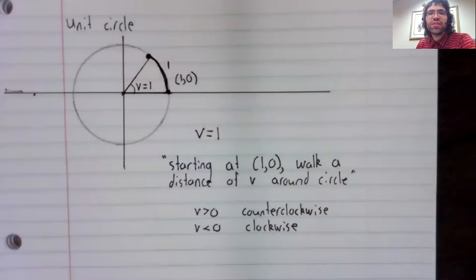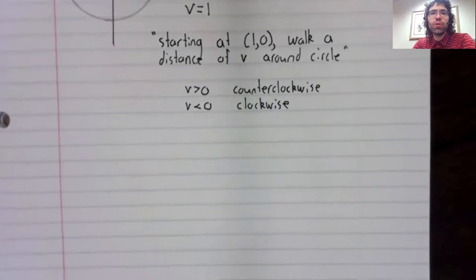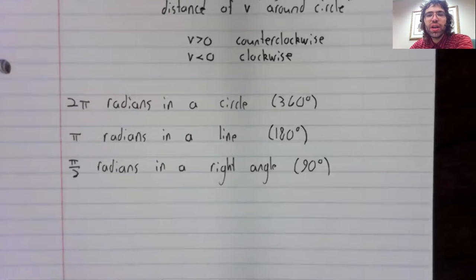Probably rather than this definition, which you should certainly know, most people think of radians in a simpler way, just in terms of the circle and degrees. Two pi radians in a circle is 360 degrees. Pi radians in a line is 180 degrees. And pi over two radians in a right angle is 90 degrees.